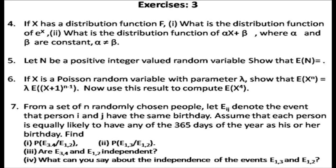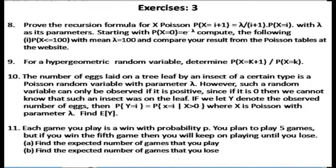Determine what can be said about the independence of events E_13 and E_12. You can almost guess the answers, but work them out: show that the probability of E_34 intersecting E_12 — all four people having the same birthday — equals the product of probabilities of E_34 and E_12. Question 8: prove the recursion formula for a Poisson random variable, that P(X = i+1) equals λ/(i+1) times P(X = i). Starting with P(X=0) = e^(−λ), you can compute subsequent probabilities from this recursion.